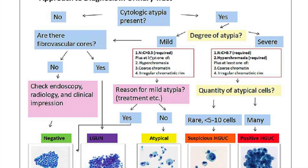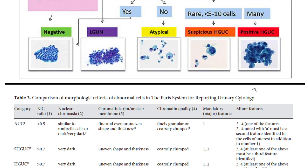If the N-to-C ratio is actually greater than 0.7, and you have hyperchromasia plus at least one of the following — coarse chromatin or irregular nuclear membranes — then you're going to want to quantify the atypical cells. If there are many of them, like more than 10, that's going to be positive for high-grade urothelial carcinoma. However, if there are fewer than five to ten cells, that's only going to get you to the suspicious category. A nice simple breakdown that can really get you a long way on your cyto rotation.